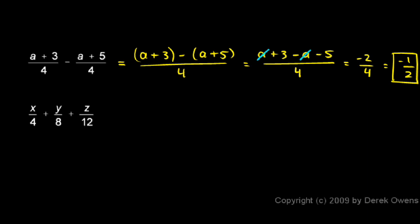So I'll take the first fraction, and to make the denominator a 24, I have to multiply it by 6, so I'm going to multiply it by 6/6, and when I multiply there I'll get a 24.